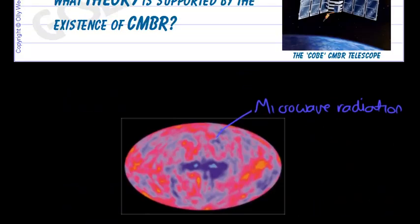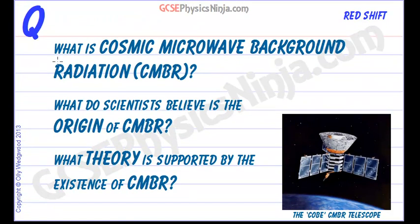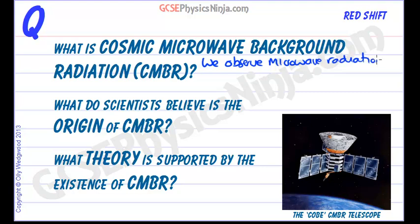So let's go back to the flash card. What is cosmic microwave background radiation? It is microwave radiation we observe from all directions in space. That's what it is.